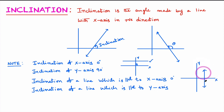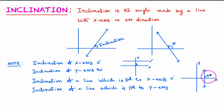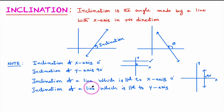Similarly, inclination of a line which is parallel to the y-axis: observe this line — this is the line parallel to the y-axis. What is the angle made by this line with the x-axis in the positive direction? This angle is 90 degrees, so the inclination of a line parallel to the y-axis is 90 degrees.